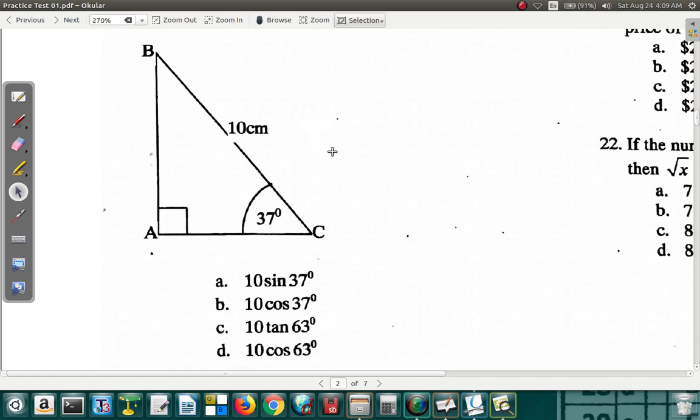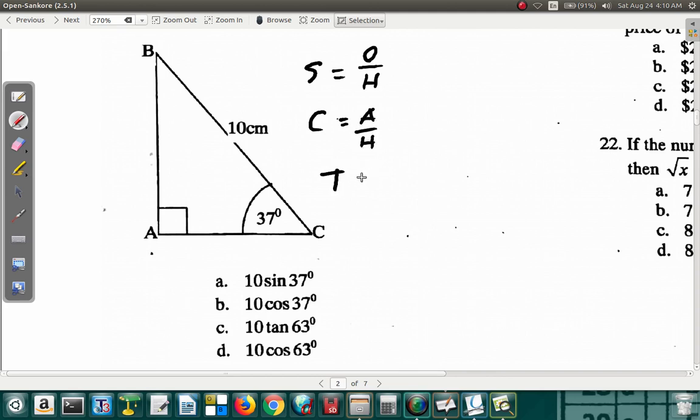Now remember, we have the three main trig ratios. Sine is opposite over hypotenuse. Cosine is the adjacent over the hypotenuse. Tangent is the opposite over the adjacent. Now, this is the opposite side, AB. They did not give us AB and they did not ask for it, so we're not interested at all in the opposite.